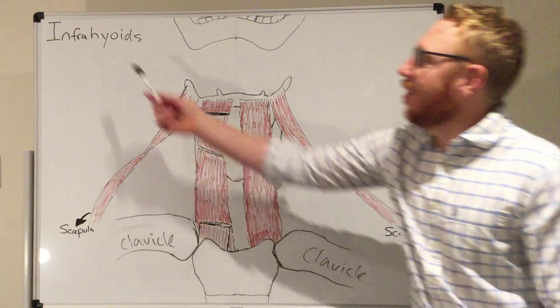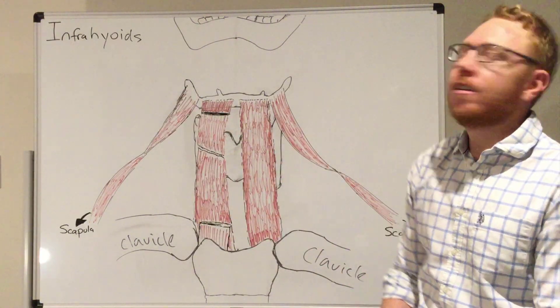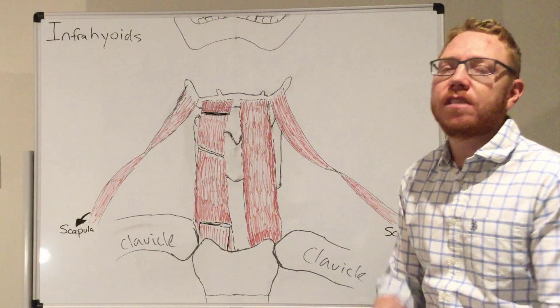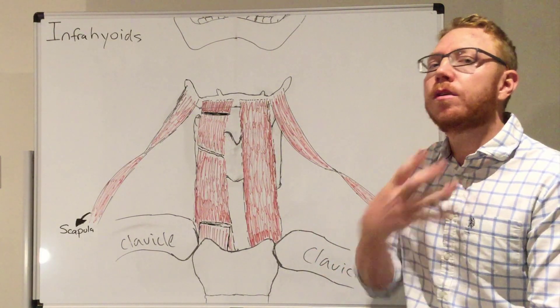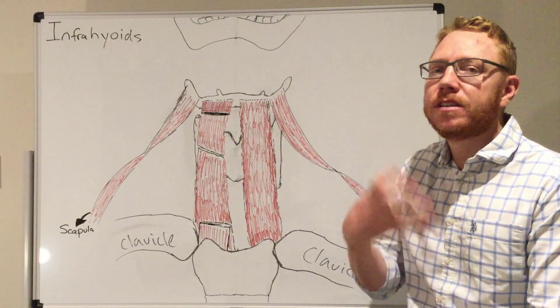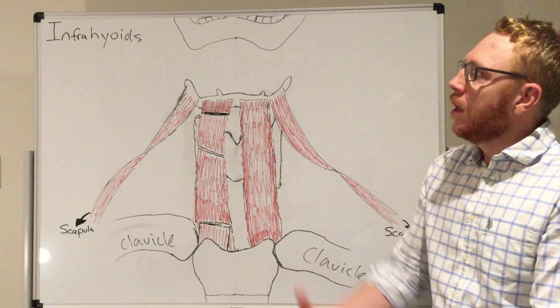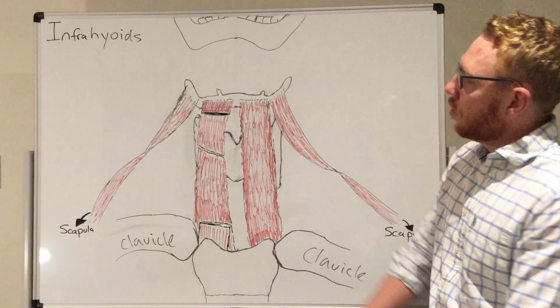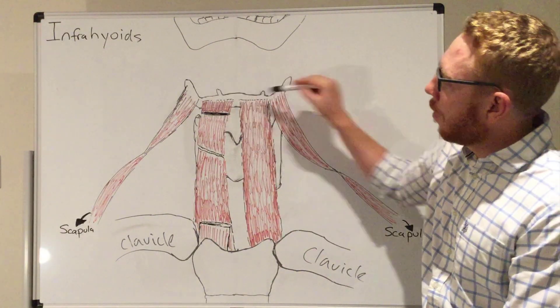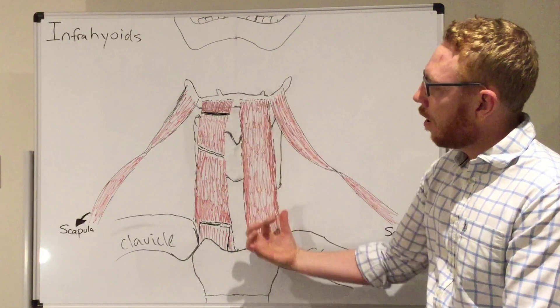Welcome to this short video on the infrahyoid muscles. This is a group of four muscles essentially found between the superficial muscle group of the neck, which are the platysma and the sternocleidomastoid, and the deeper paravertebral muscles. These muscles are attached to the hyoid bone and draw the hyoid down.